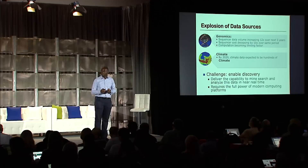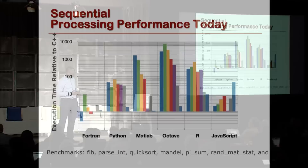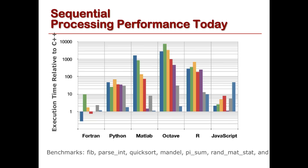The idea is that you'd like to do this in near real time. In order to provide this capability, we're going to have to use all the advantages we get from modern computing platforms. I've got this chart here which shows a set of programming languages that people potentially use to program computers today — Fortran on the left, Python, MATLAB, R, JavaScript — all relative to C.